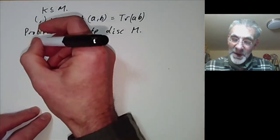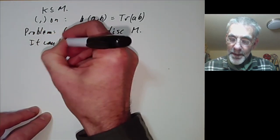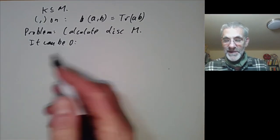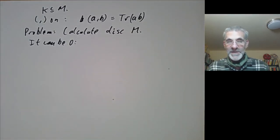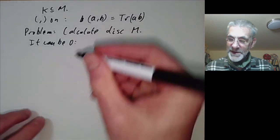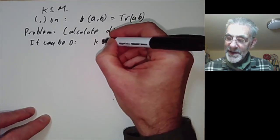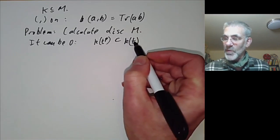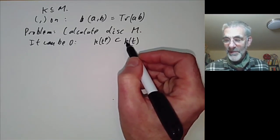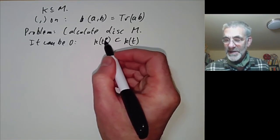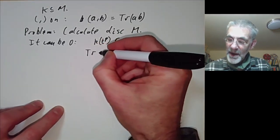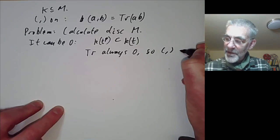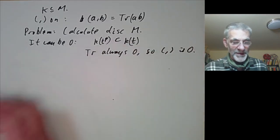First of all, the discriminant can be zero, which is a slightly unpleasant thing. If the discriminant is zero, something unpleasant is going on — you've probably got an inseparable extension. Indeed, if you look at the standard inseparable extension, taking the field of all rational functions in t over some field k of prime characteristic, it has a subfield generated by t^p. You can check the trace is always zero, so the bilinear form is identically zero and the discriminant is zero.